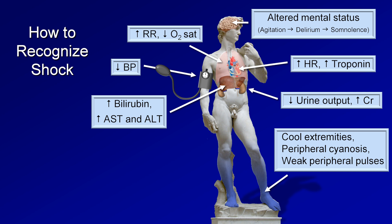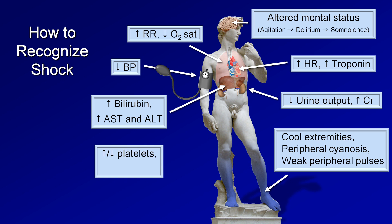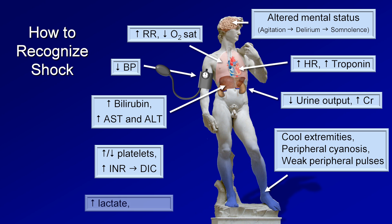More systemic abnormalities include either high or low platelet counts, as well as an elevated INR that can progress to disseminated intravascular coagulation, particularly in septic shock. Lastly, the most important finding of impaired tissue perfusion in shock is an elevated lactate level, which is frequently, though not always, associated with decreased serum bicarbonate.